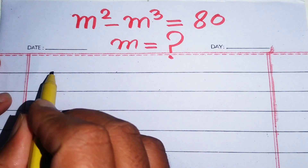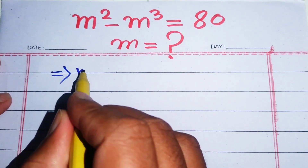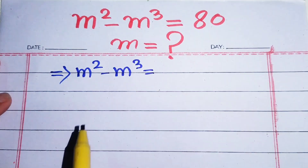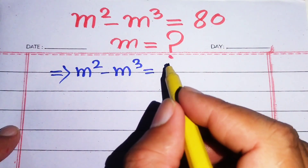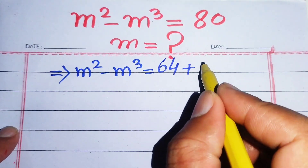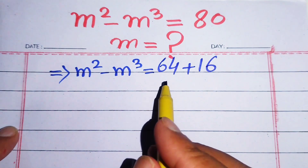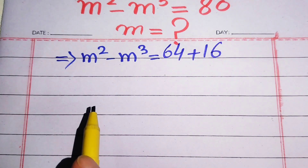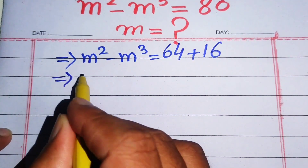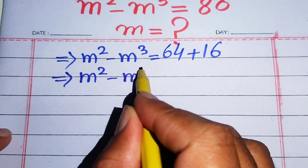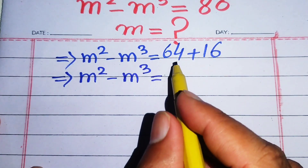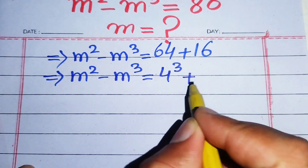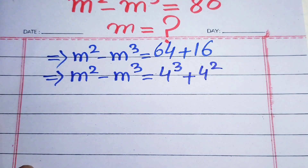The very first step we are going to do is write this equation as m squared minus m cubed equals 80. We break 80 as 64 plus 16, and we know that 64 plus 16 equals 80. We rearrange this equation: m squared minus m cubed equals 4 cubed plus 4 squared, since 64 equals 4 cubed and 16 equals 4 squared.